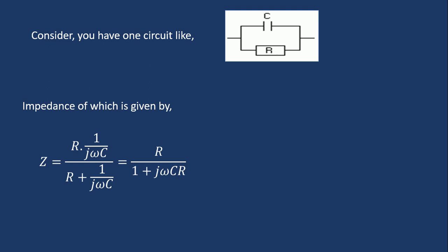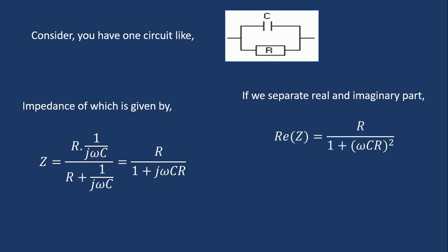If you simplify, you will get Z equal to R divided by (1 + jωCR). Separating real and imaginary parts, the real part equals R divided by (1 + (ωCR)²), and the minus imaginary part of Z equals ωCR² divided by (1 + (ωCR)²).